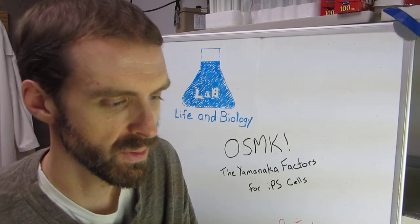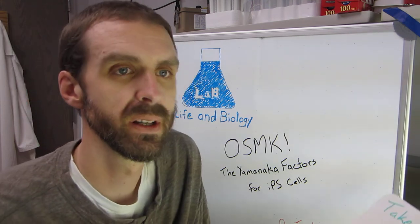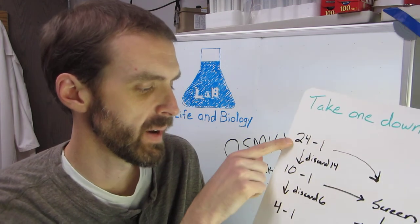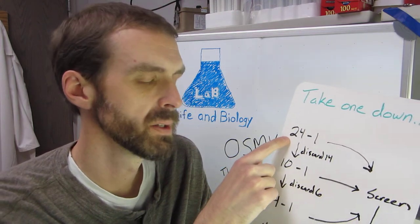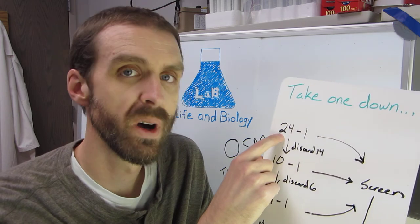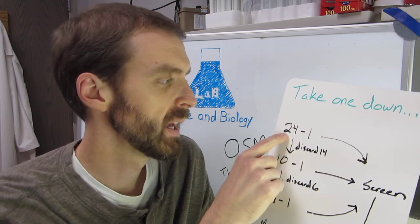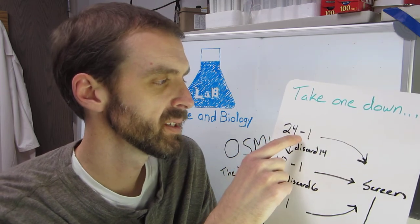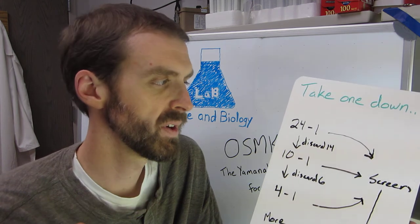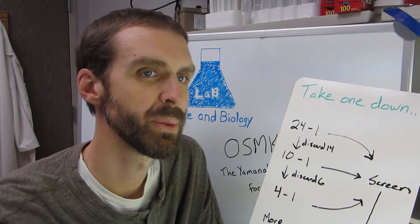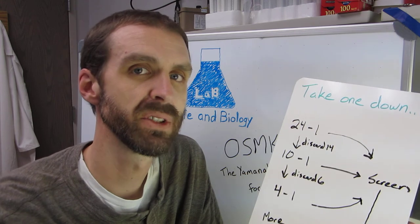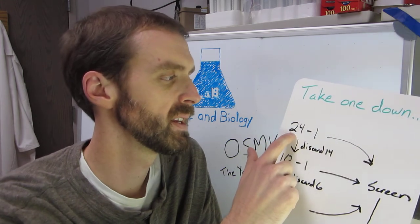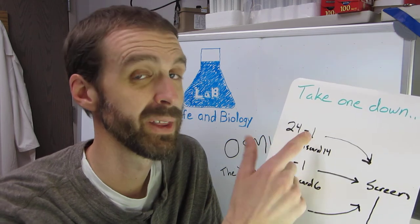So how they did this screen was pretty interesting. They took differentiated cells and they had retrovirus vectors, which each express one type of gene. And they had 24 of these different retrovirus vectors. And what they did is they would take the differentiated cells and transfect them with all 24 of these factors. And they were able to get induced pluripotent stem cells. So then they did 24 different experiments where, or 23, I don't know,